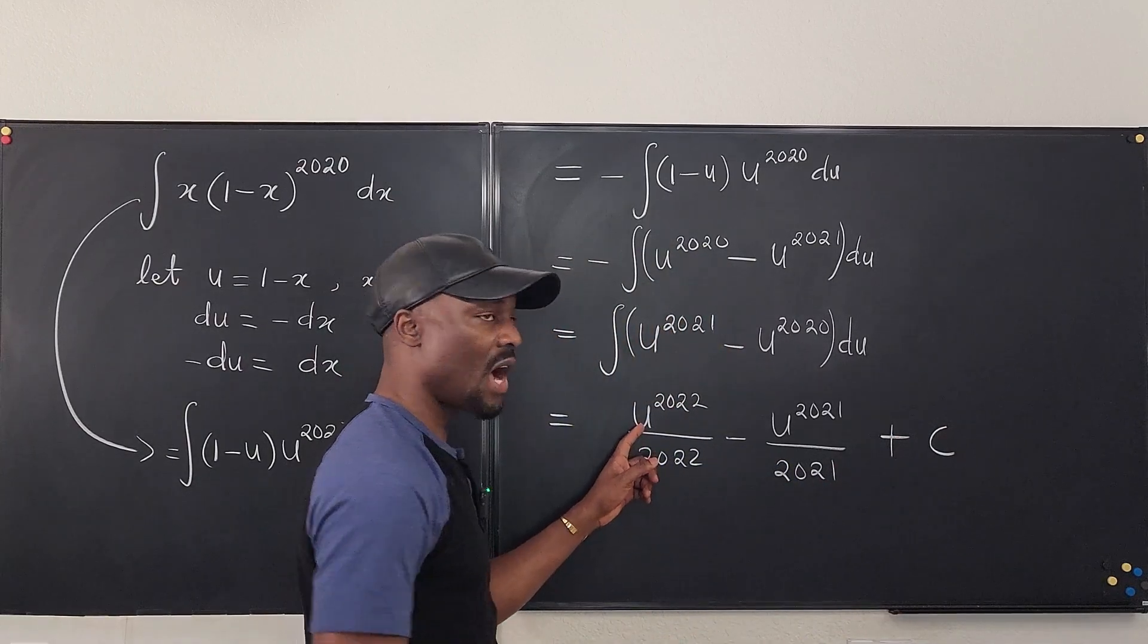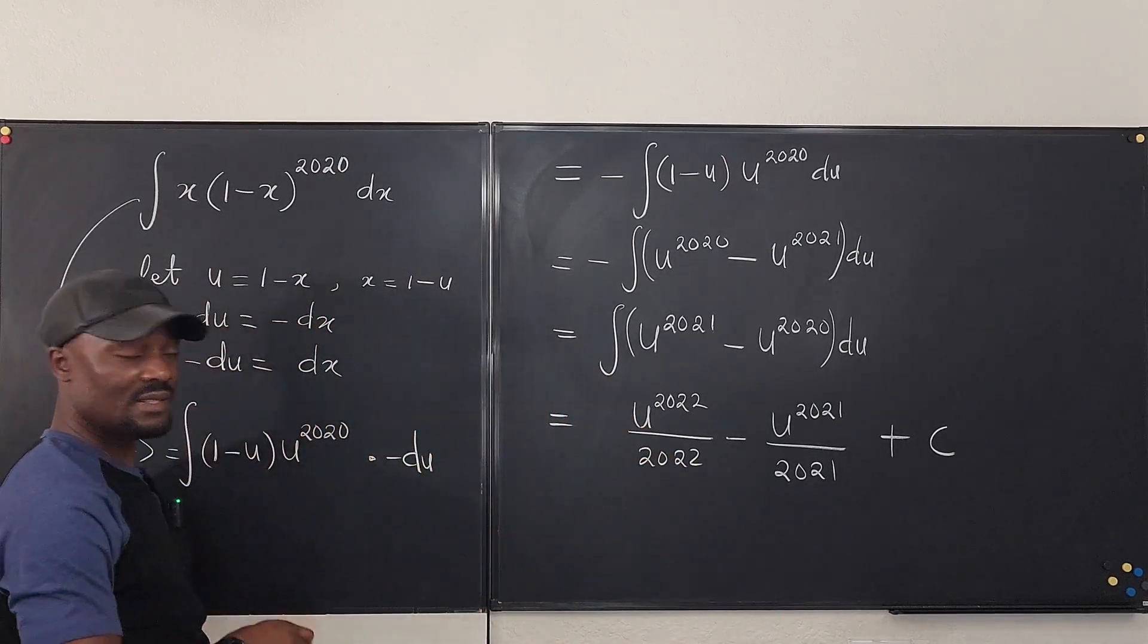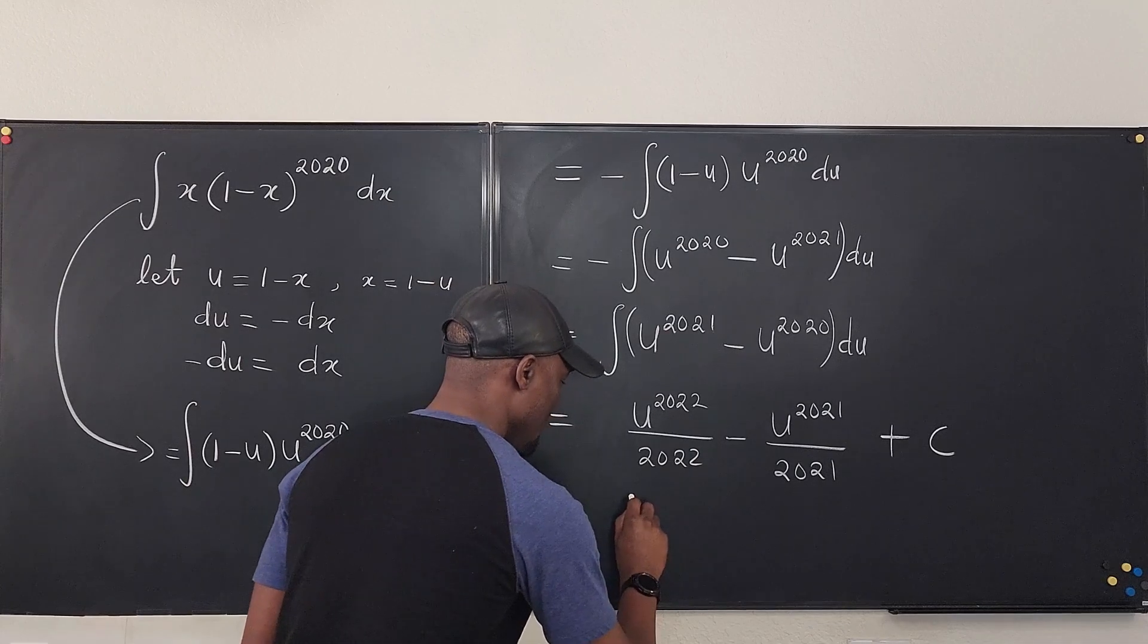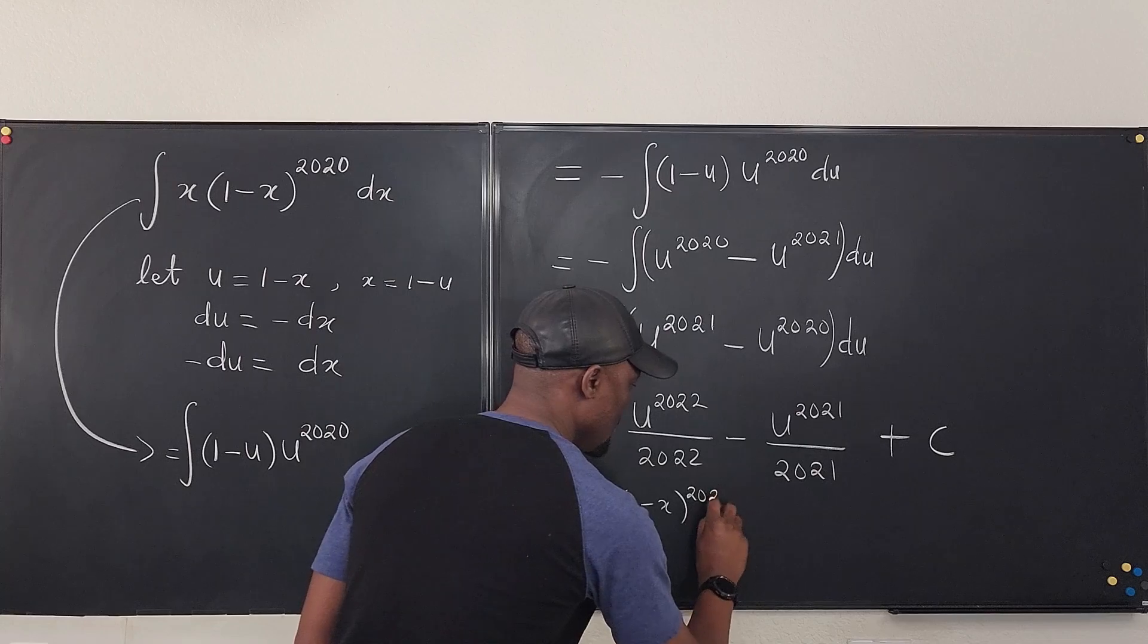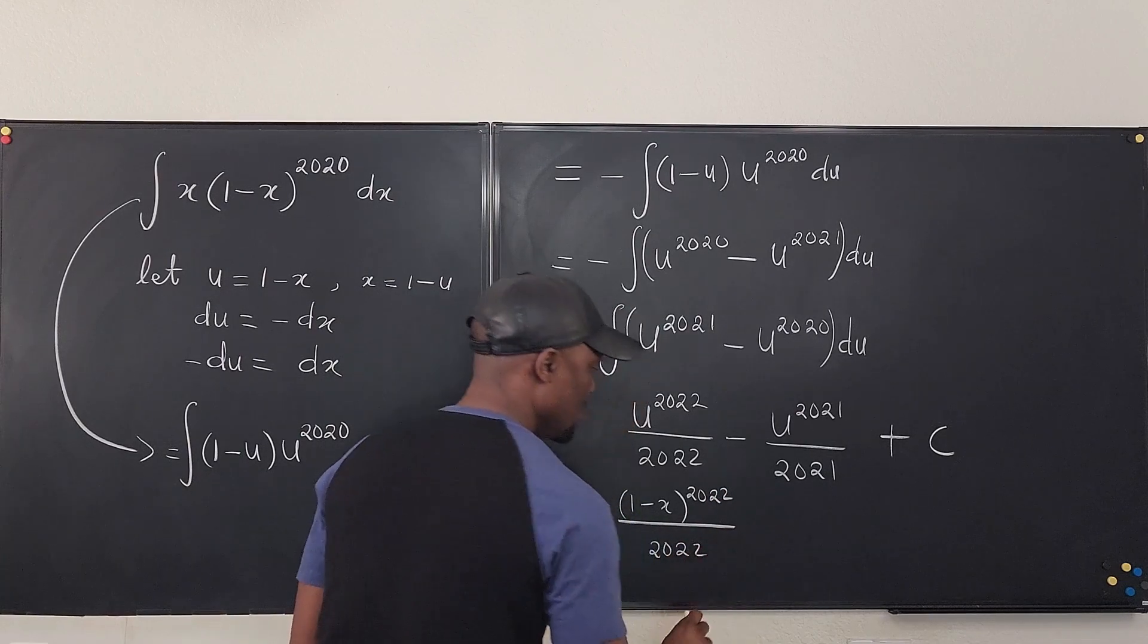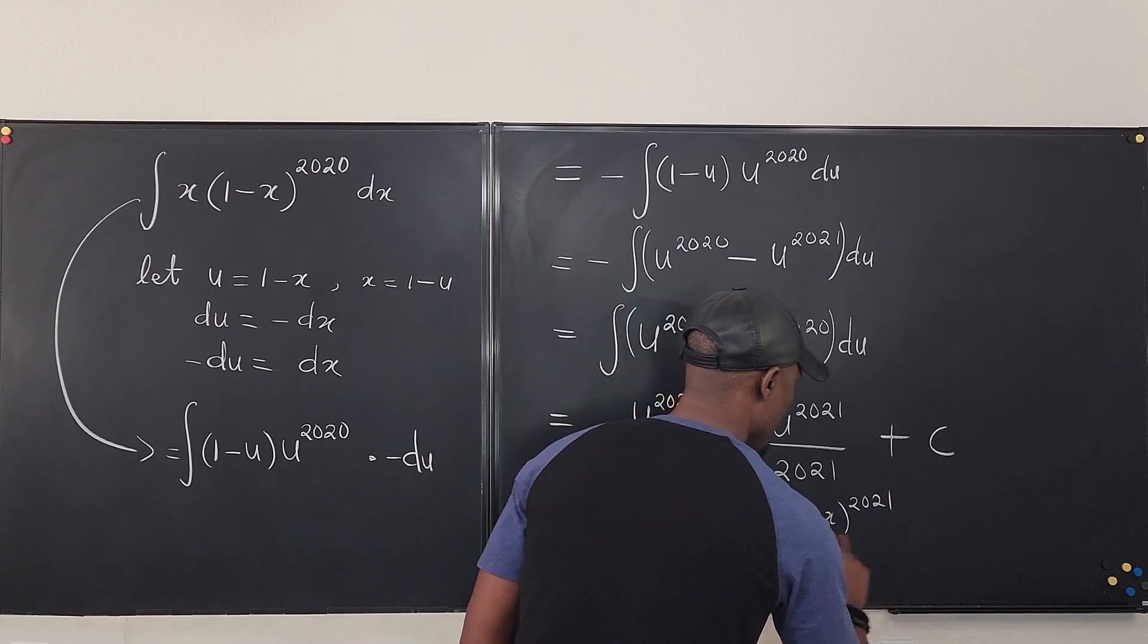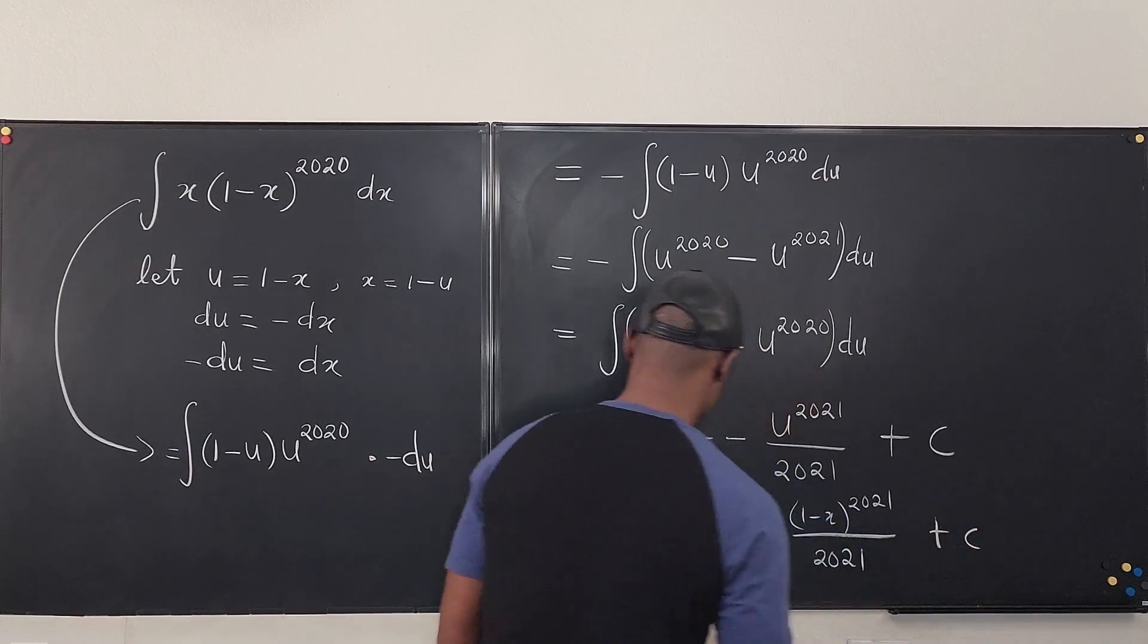Well we know that our u was 1 minus x in the beginning, so let's just go here and say our answer is going to be 1 minus x raised to power 2022 divided by 2022 minus 1 minus x to the 2021 divided by 2021 plus C.